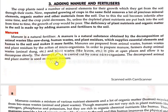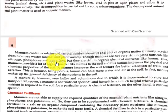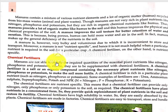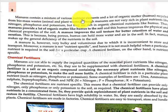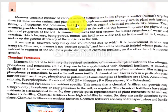We use organic manure for plants and crops. Manures contain a mixture of various nutrient elements and a lot of organic products. This involves recycling plant and animal waste. Manures decompose the waste.